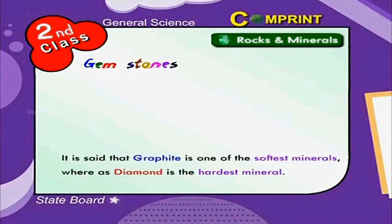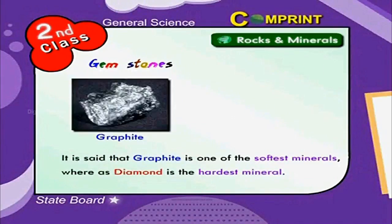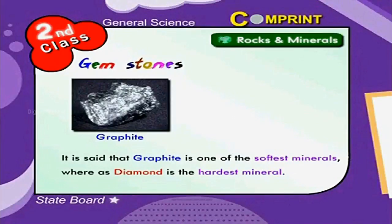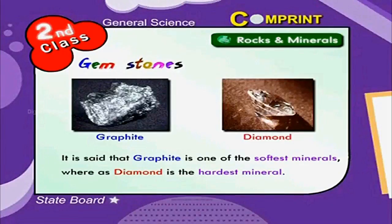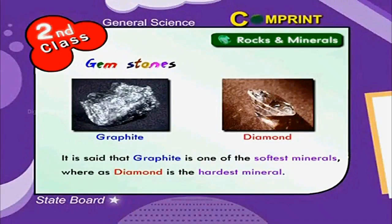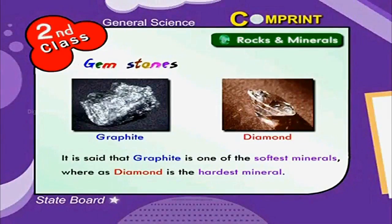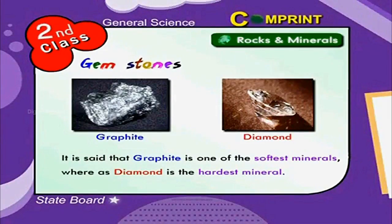It is said that graphite is one of the softest minerals, whereas diamond is the hardest mineral. So, children, we have to observe whatever comes across to us, because the process of learning gives us knowledge.